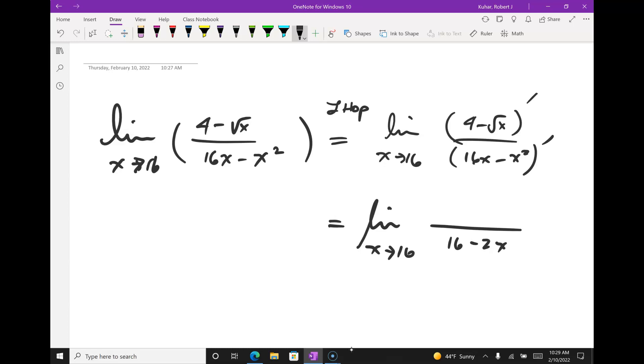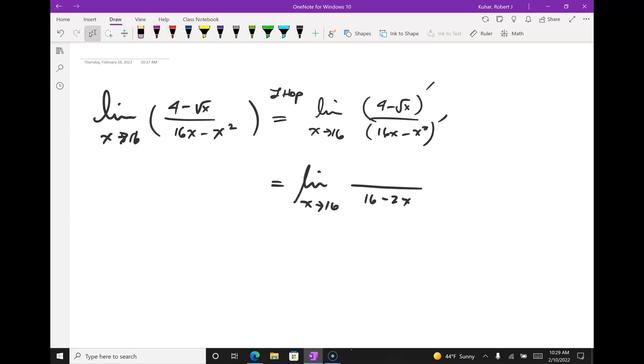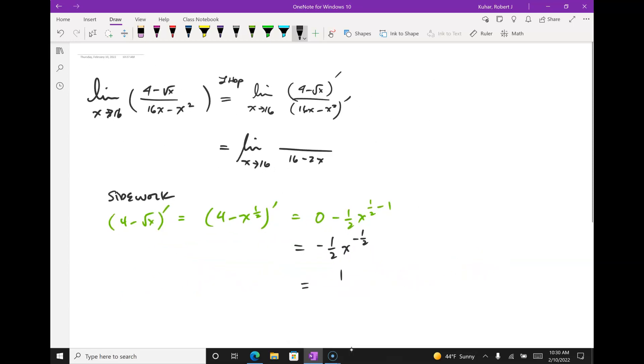So, derivative of the upstairs, I got to do a little bit of work. This is my side work here. I'm saying 4 minus square root of x prime is 4 minus x to the 1 half all prime, is 0 minus 1 half x to the 1 half minus 1. So, I get minus 1 half x to the minus 1 half.